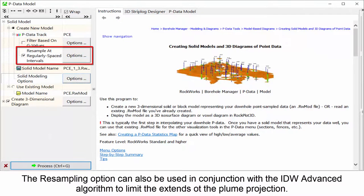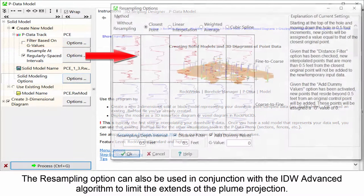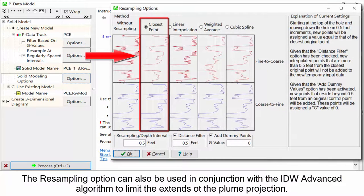The resampling option can also be used in conjunction with the IDW advanced algorithm to limit the extents of the plume projection.